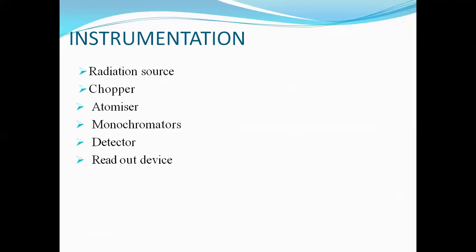The instrumental components of atomic absorption spectroscopy consist of a radiation source, chopper, atomizer, monochromator, detector, and readout device.